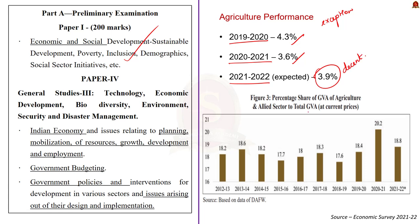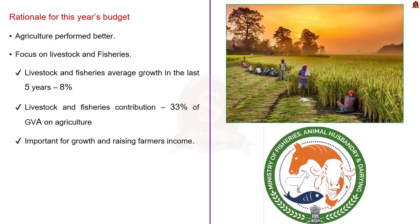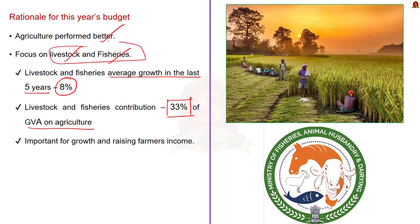Looking at the graph from Economic Survey 2021-2022, in 2020-2021, the share of agriculture to total GDP reached 20.2%, which was the highest in the last 17 years. The author is of the opinion that due to this good performance, the government did not offer extra focus to agriculture in the budget. Within agriculture, livestock and fisheries are the two sub-sectors that have shown an average annual growth rate of 8% or more in the last five years, roughly contributing about 33% of the gross value added in agriculture.